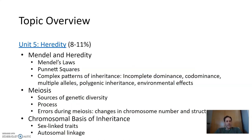Unit 5 was heredity. So we began with Mendel's laws. We learned how to do punnett squares and then began to analyze more complex patterns of inheritance, like incomplete dominance, co-dominance, multiple alleles. That was like blood groups where there's A, B, and O. Polygenic inheritance and environmental effects.